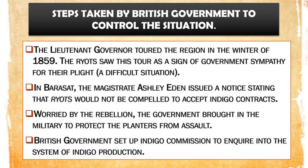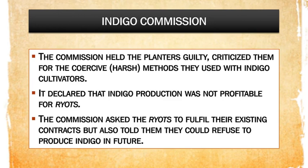The British government set up the Indigo Commission to inquire into the system of indigo production — how indigo was produced, what the condition of the indigo cultivators was, and what the planters were doing. For all these reasons, the Indigo Commission was set up.